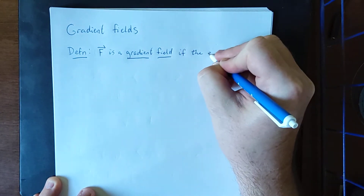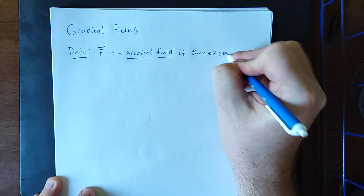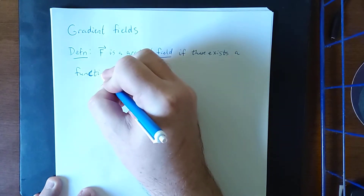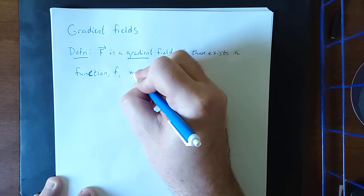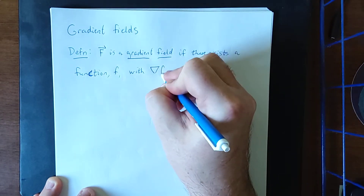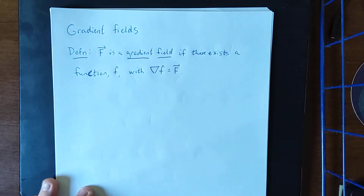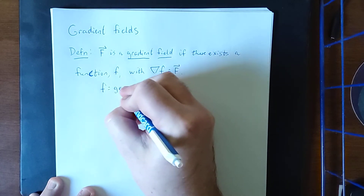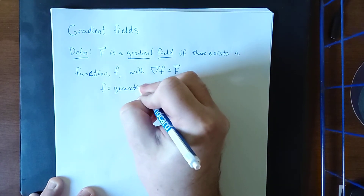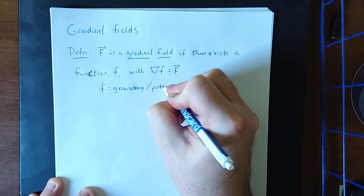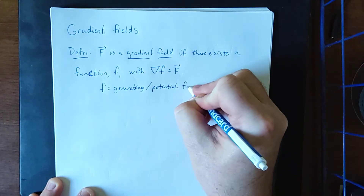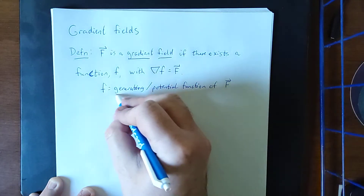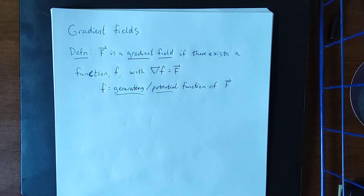A vector field F is a gradient field if there exists a function, which we'll call f, with the gradient of f being equal to your vector field. If you can find this function f, then f is referred to as the generating or potential function of capital F.